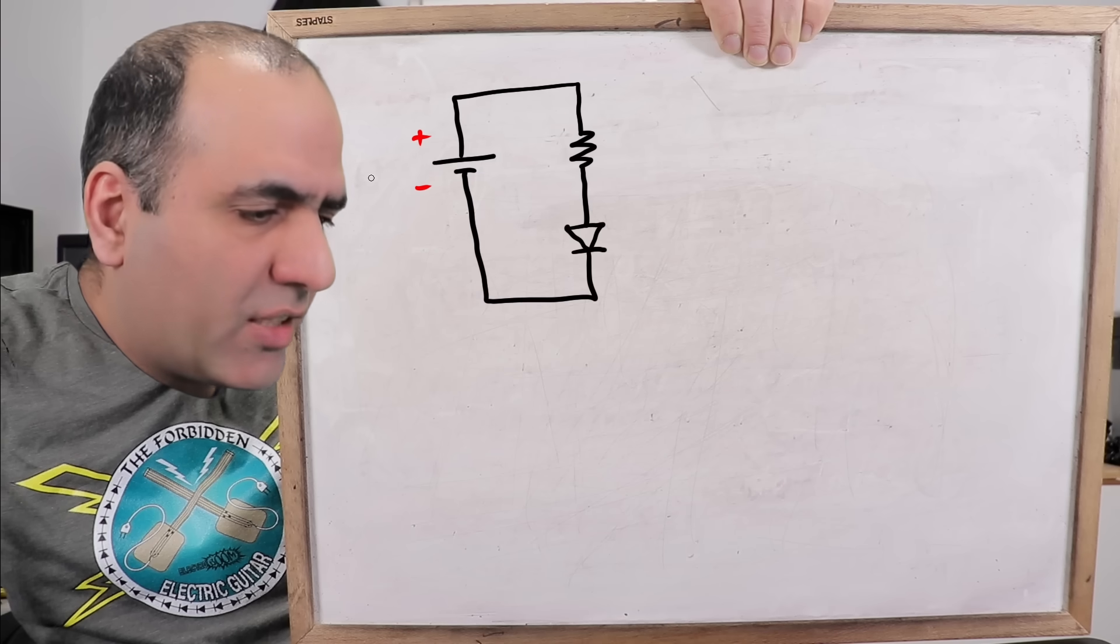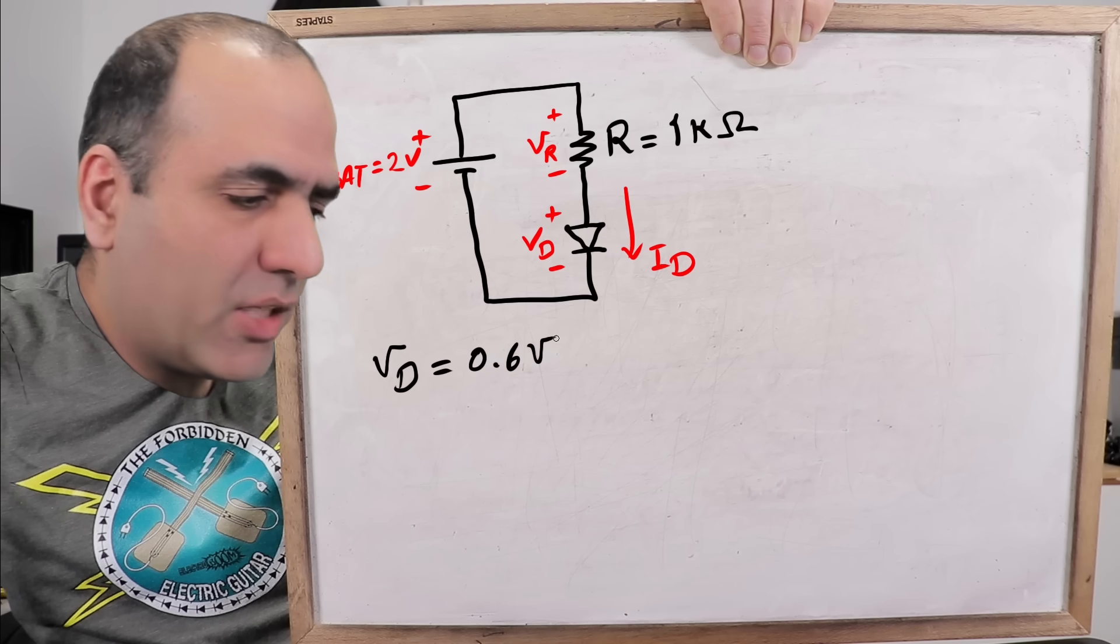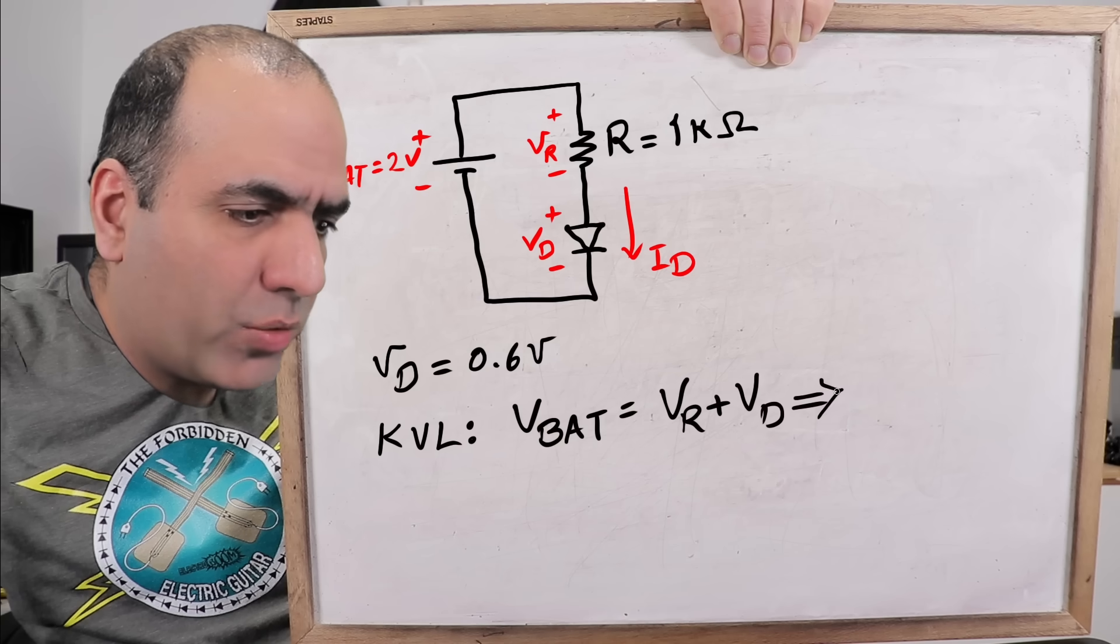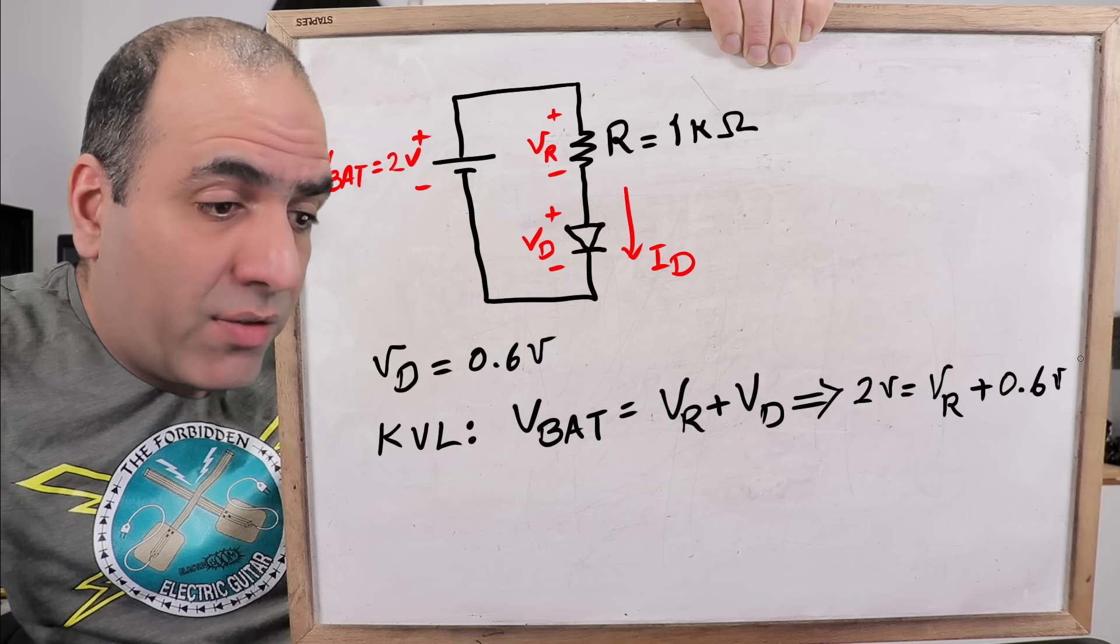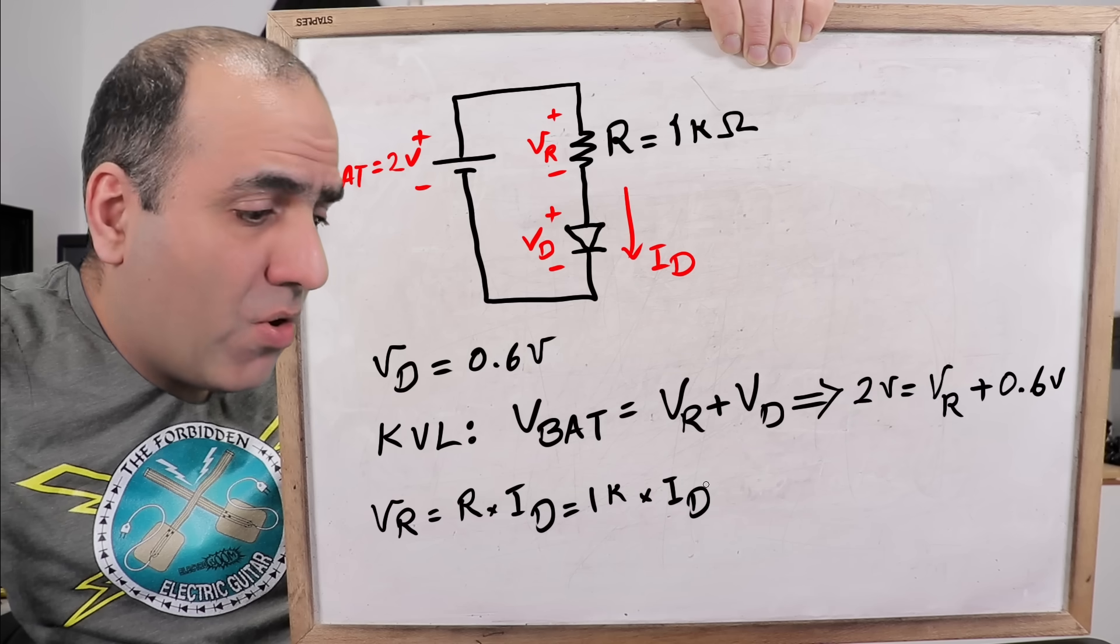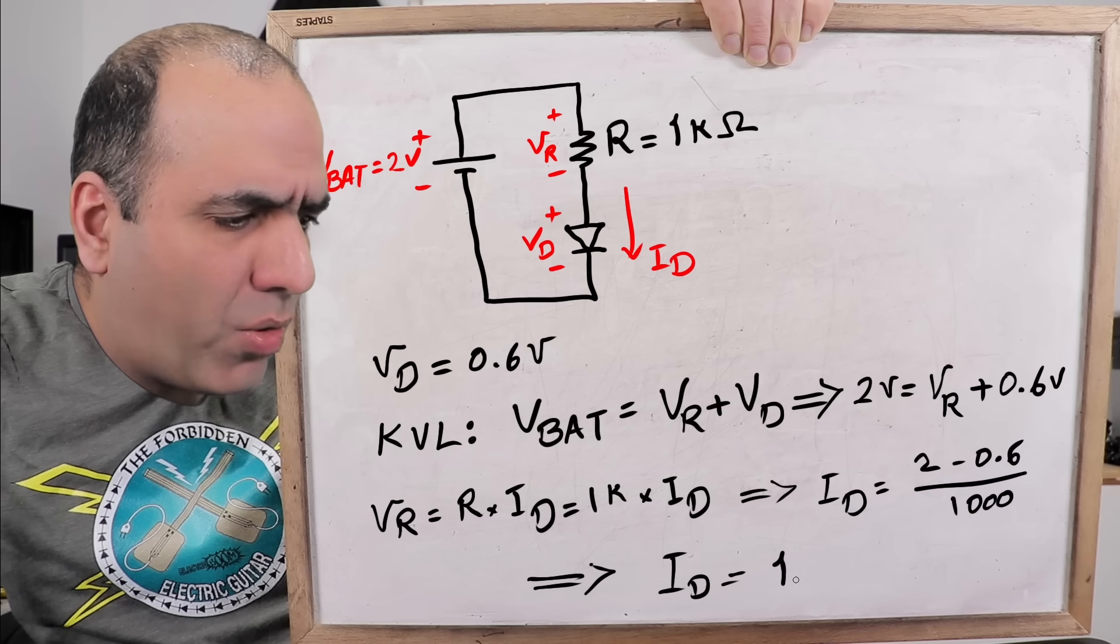Like if they give you this circuit and ask you to calculate the current, you can just assume the diode voltage is 0.6 volts. Write a KVL as VBAT equals resistor voltage plus the diode voltage. Or 2 volts is equal VR plus 0.6. And VR is equal RI or equal to 1K times I. So, I is equal to 2 minus 0.6 divided by 1000 or almost 1.4 milliamps. And if they want it any more accurate, tell them to pull the soldering iron out of their butts. Because nobody writes diode and accuracy in one sentence.